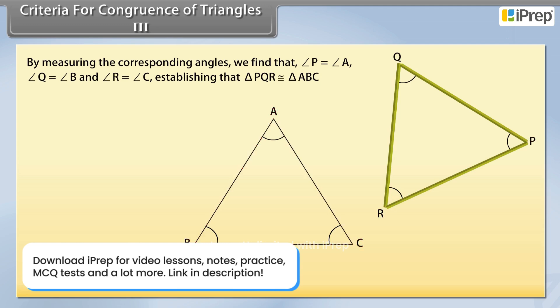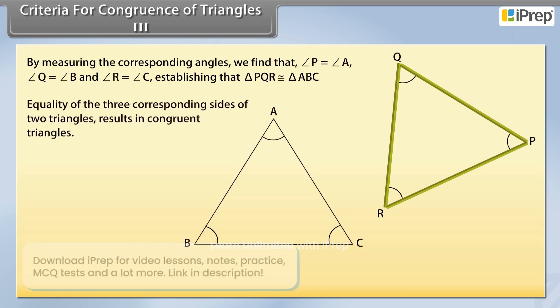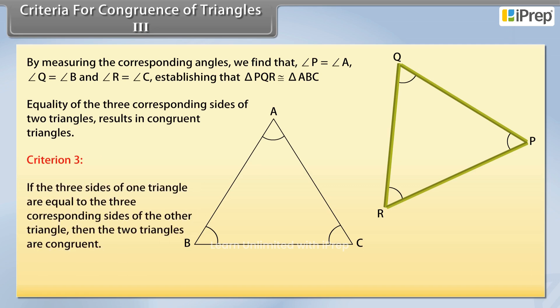This means that equality of the three corresponding sides of two triangles results in congruent triangles. Thus we have Criterion 3. If the three sides of one triangle are equal to the three corresponding sides of the other triangle, then the two triangles are congruent. This is referred to as SSS Side Side Side Congruence Rule.